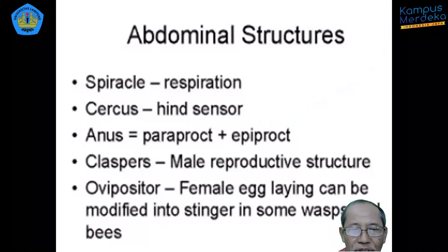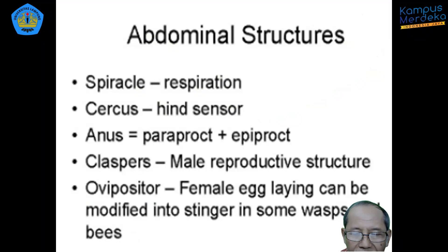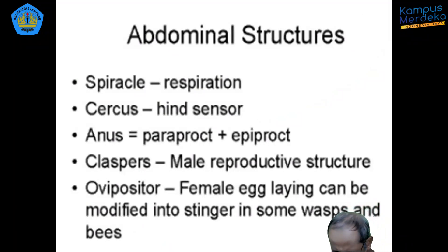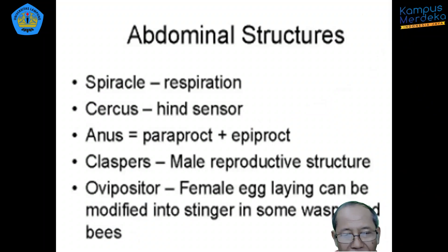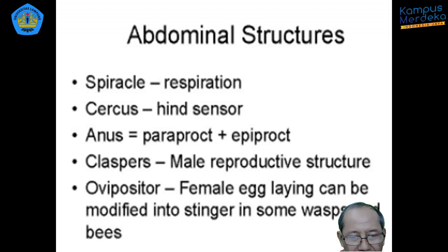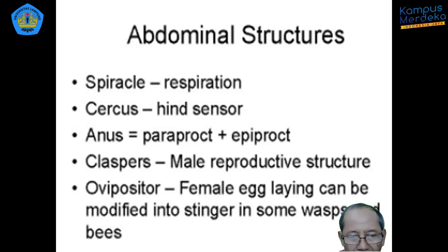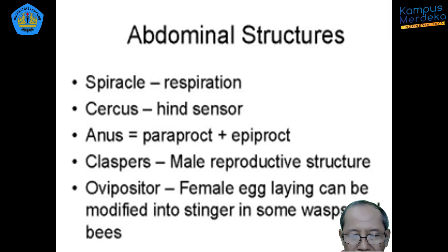Mari kita bahas struktur abdomen. Ada spirakel sebagai titik-titik lubang nafas. Kemudian ada serkus, organ indera bagian belakang, yang merupakan reduksi dari ruas terakhir abdomen. Setelah serkus ada anus, dengan bagian paraprok di kiri dan kanan, serta epiproct yaitu bagian meruncing di tengah yang diapit oleh paraprok.